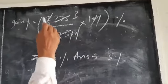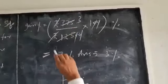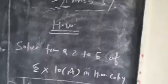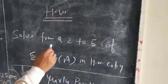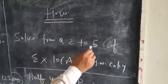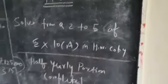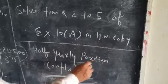Then, when we divide this by this, we get 3%. Therefore, answer equals 3%. Homework: solve questions 2 to 5 of Exercise 10A in homework copy. Half yearly course and complete it.